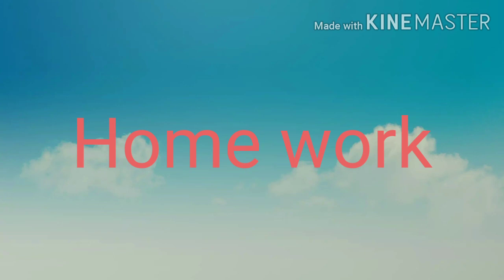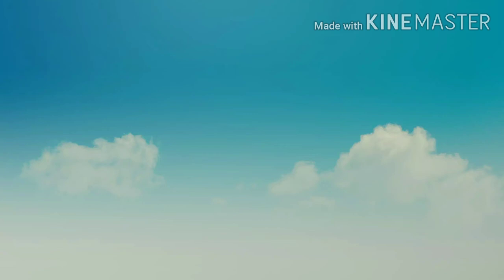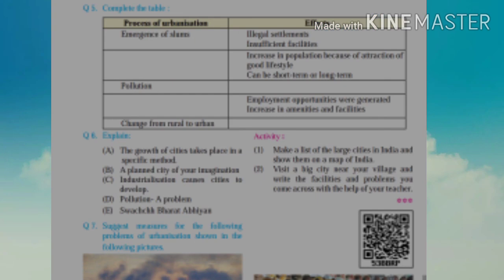It is time for homework. Read the lesson twice and listen to the video before doing the homework. Question numbers 1 and 2 you can do in classwork. Question 3 — outline the important advantages — and question number 4, you can attempt in your homework book of geography. Along with these, question numbers 5, 6 and 7 — write the answers in your homework book of geography, and read the answers carefully until you understand and remember them.